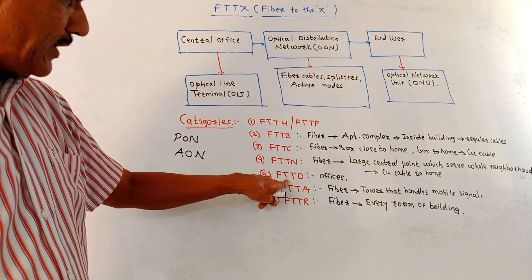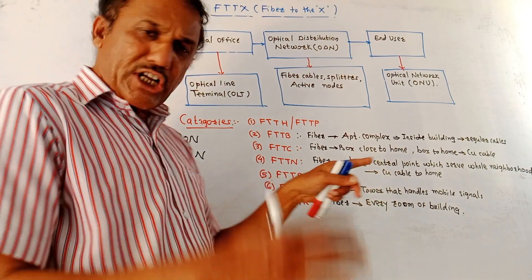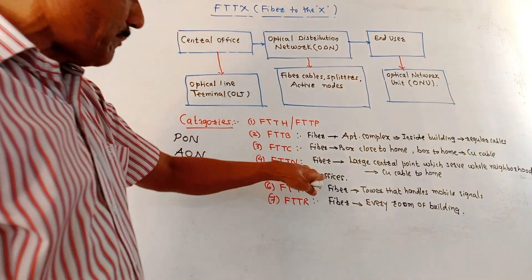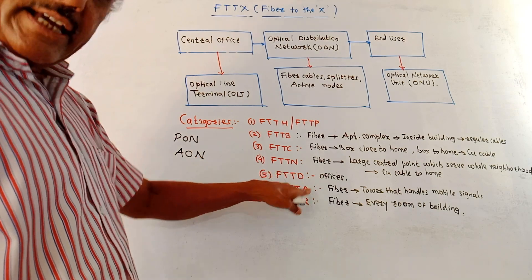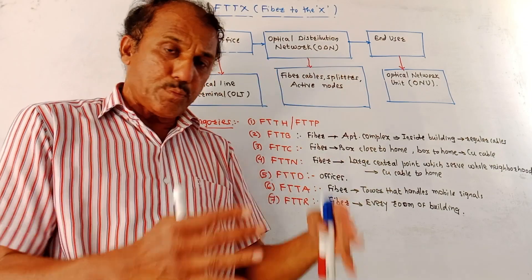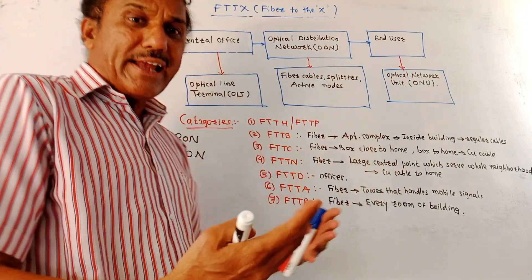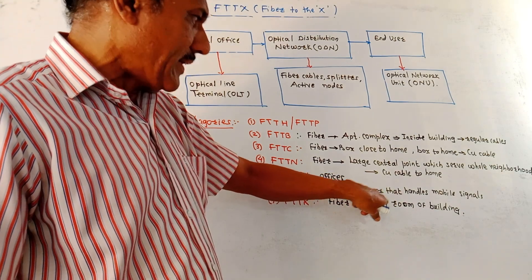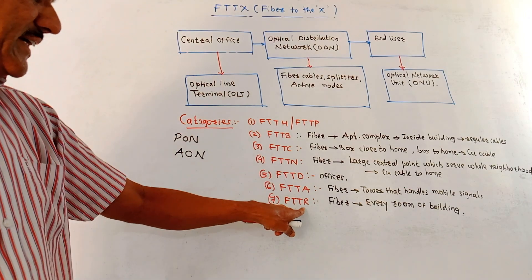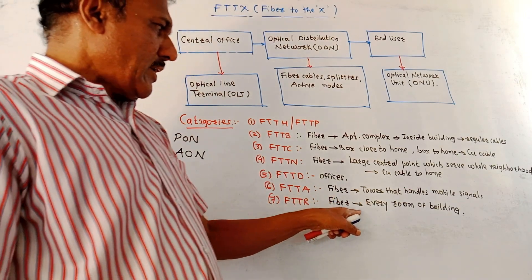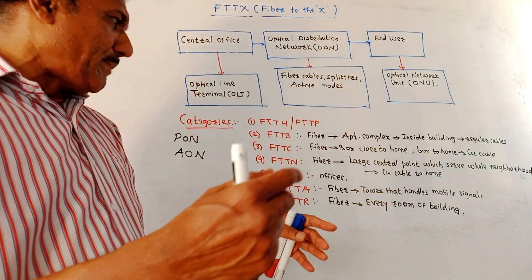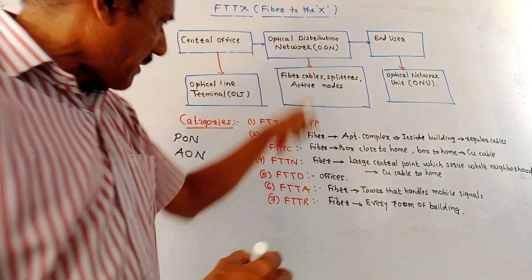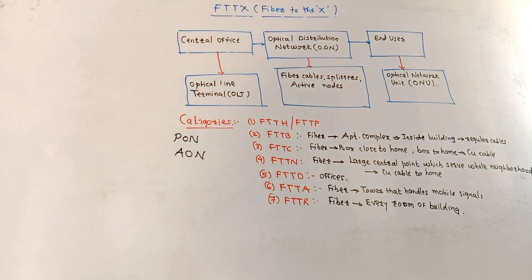Then FTTD — fiber to the desk — where a direct connection is given to a cabinet or desk, usually preferred in offices. Then FTTA — fiber to the antenna — useful for 5G mobile cell connections, where fiber is connected to the mobile tower handling different mobile signals. Finally, FTTR — fiber to the room — where every room of a building gets a direct fiber optic connection.